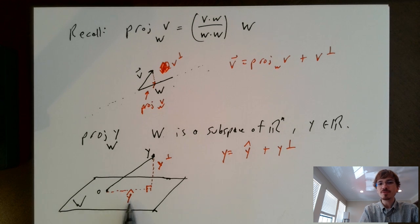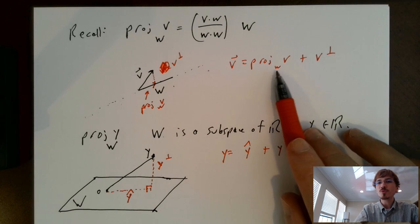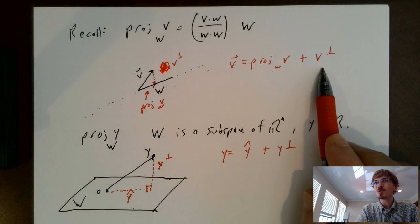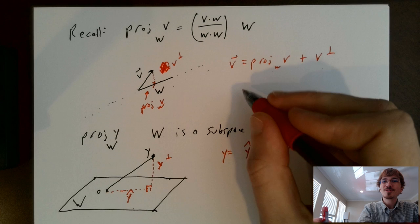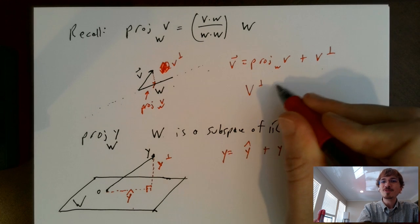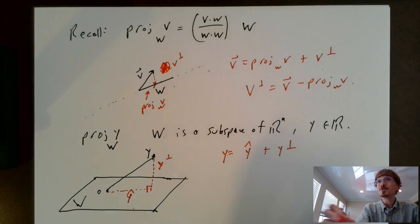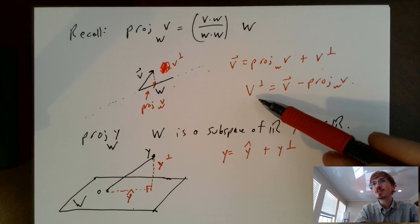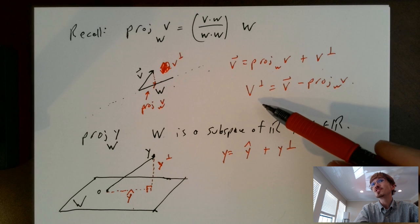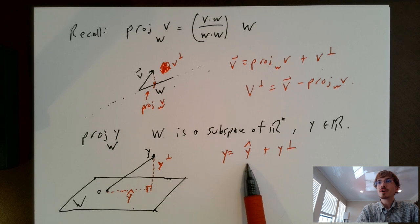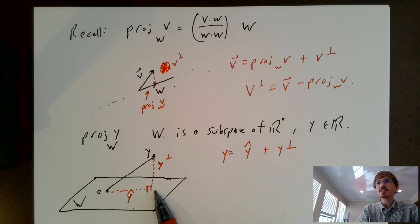If we know what the projection component y-hat is, we can find the perpendicular component by just subtracting. We defined v-perp as the vector v minus the projection of v onto w. So if we can find this projection component, finding the perpendicular component is pretty easy — just subtract. So how do we define this orthogonal projection of y onto a subspace capital W?